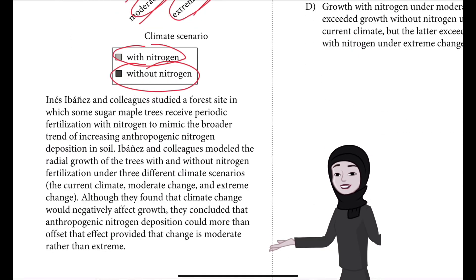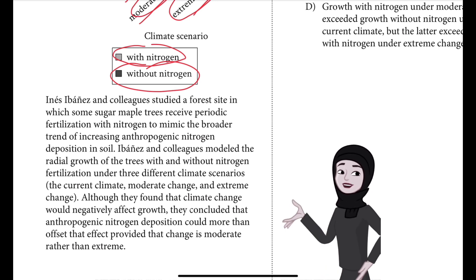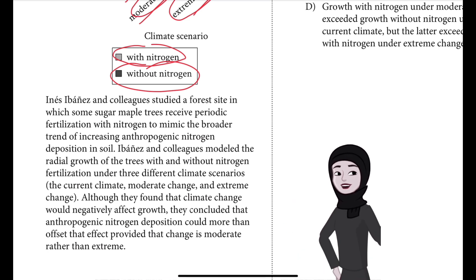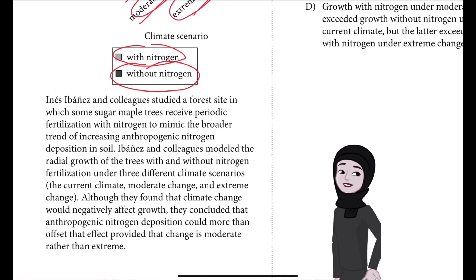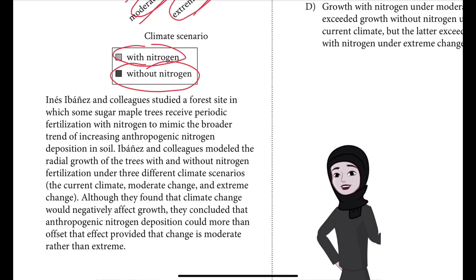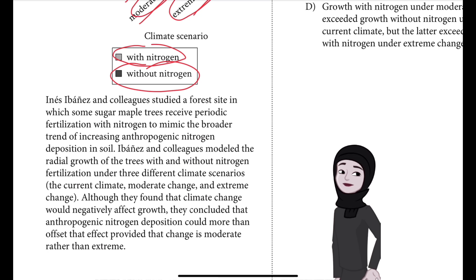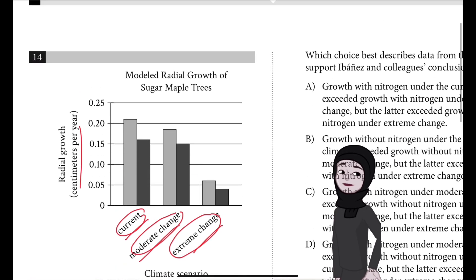Ebanes and colleagues studied a forest site where some sugar maple trees received periodic fertilization with nitrogen to mimic the broader trend of increasing anthropogenic nitrogen deposition in soil. They modeled radial growth with and without nitrogen under three climate scenarios. Although they found climate change would negatively affect growth, they concluded that anthropogenic nitrogen deposition could more than offset that effect, provided change is moderate rather than extreme.